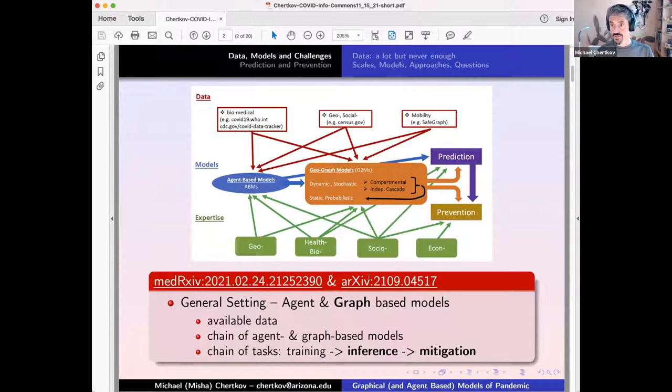That's my roadmap of activities which we started with pandemics. What I'll be telling you about is based on those two papers which are available in archive, and only some portions of this roadmap is covered. Specifically I'll be talking about inference, prediction, and prevention of pandemics. There are many other aspects which we are planning to go ahead, and one reason for me to talk here is maybe to look for collaborators.